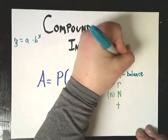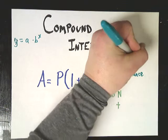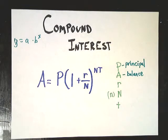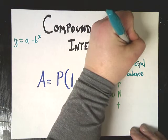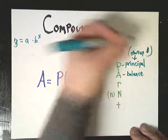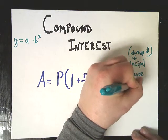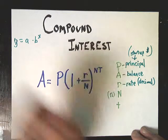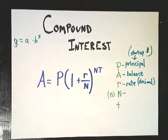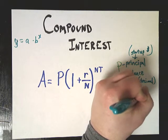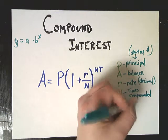P represents the principal, which would be the initial amount that you have in the account. So startup money. The r represents your rate, which is always in decimal form. The n, that would be the number of times interest is compounded per year. And t would be the total number of years.